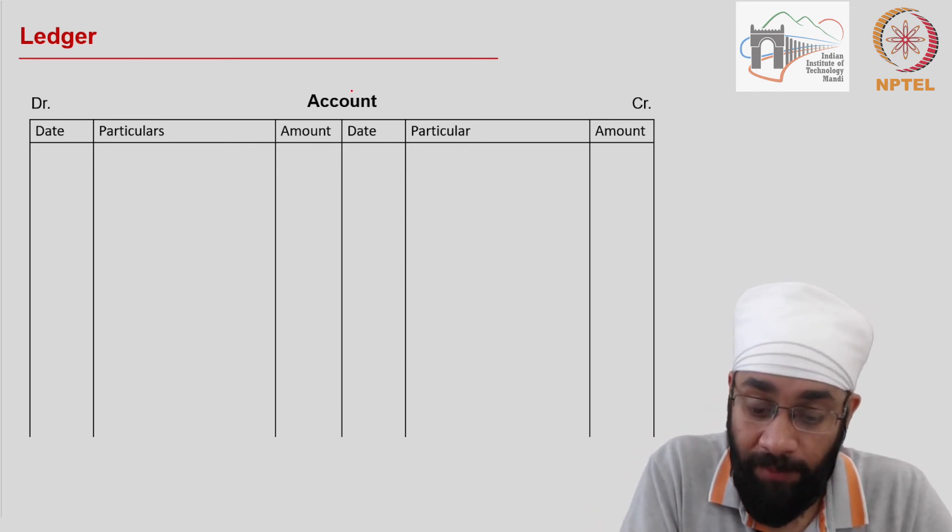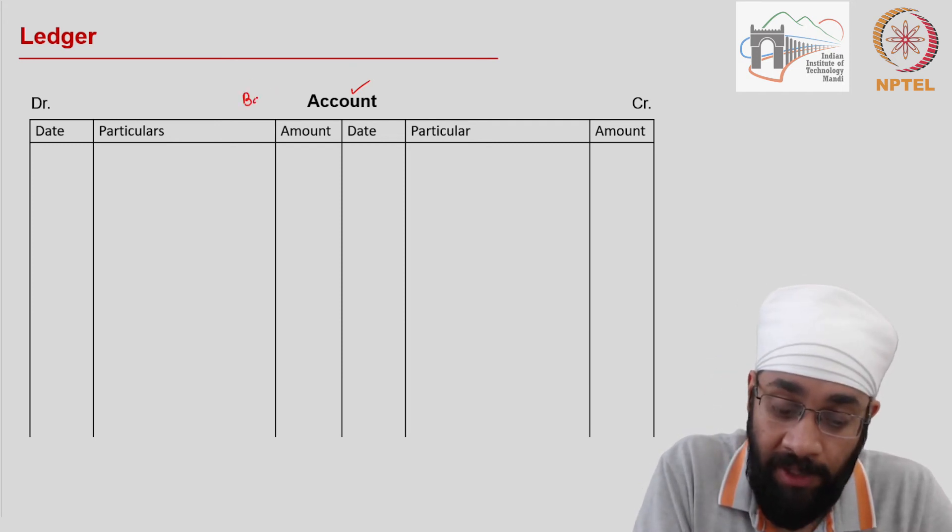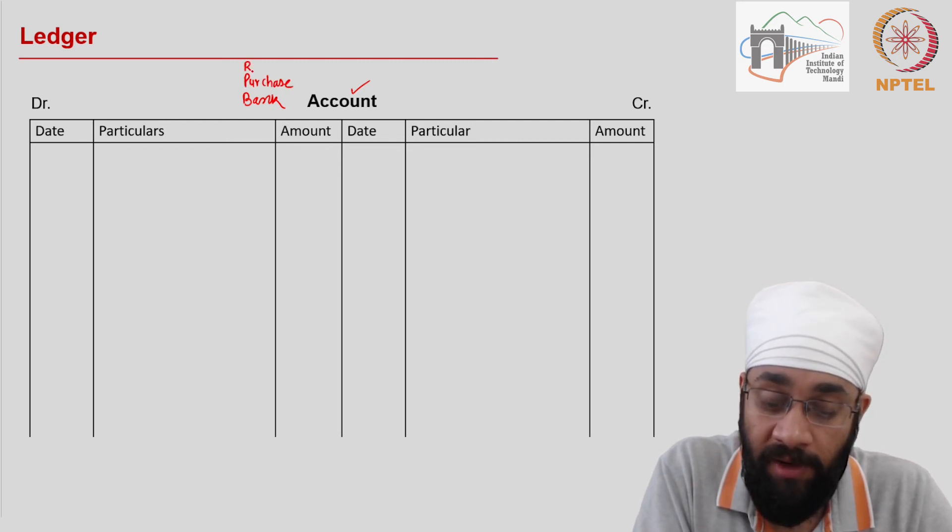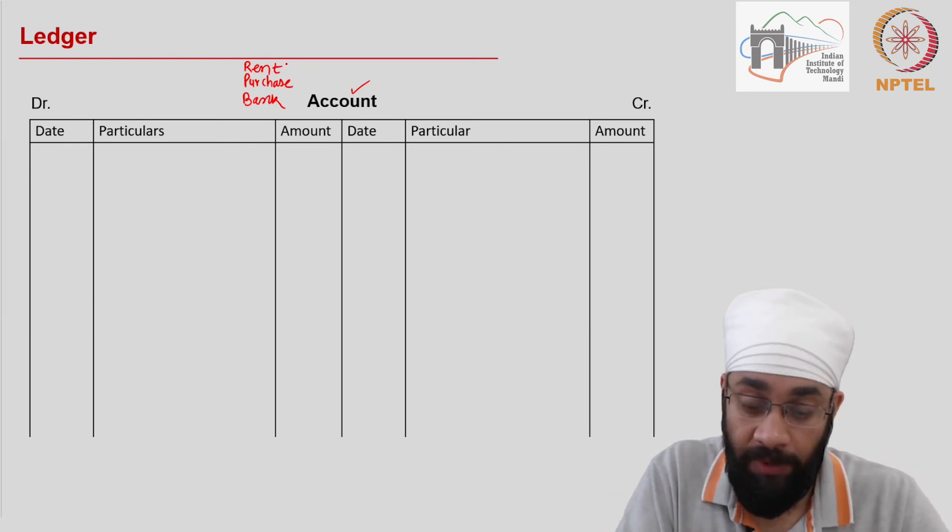So at the top you see 'account' written, you could prefix to it any name - it could be bank account, it could be purchase account, it could be a rent account, you could name it anything. So any account can be prepared.